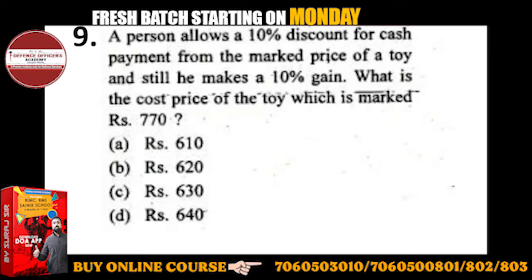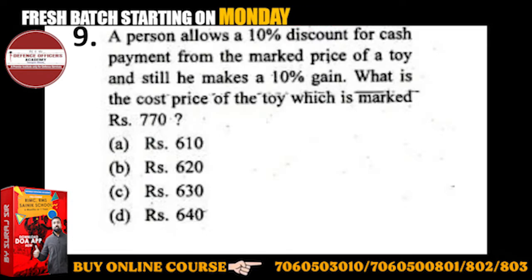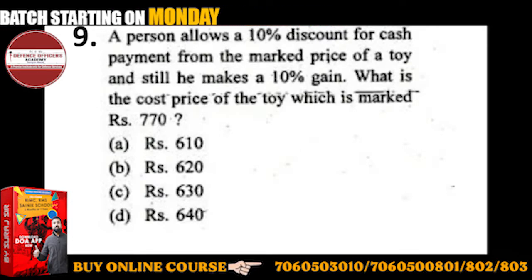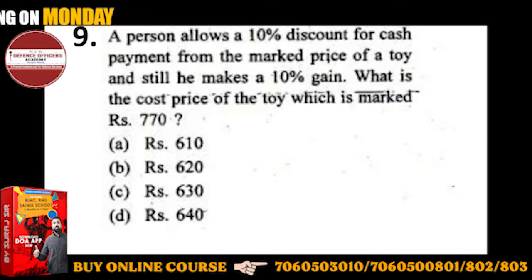A person allows a 10% discount for cash payment from the marked price of a toy and still makes a profit of 10%. So what is the cost of the toy which is marked? So what is given to you?